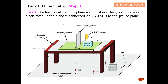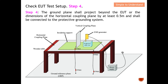Step number four: the ground plane should project beyond the EUT or the dimension of the horizontal coupling plane by at least 0.5 meters, and should be connected to the protective ground system. The ground plane must extend at least 0.5 meters outside the horizontal coupling plane on all sides.